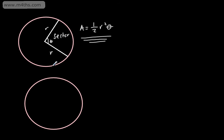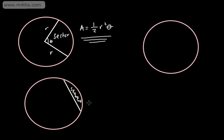What I'm now going to do is draw a segment. A segment is cut off by a chord, so this is a segment right here. It's the area trapped between the chord and the circumference. If I draw another circle, what we can do is look at how we can find the area of a segment from using the area of a sector.